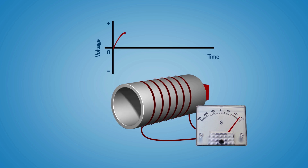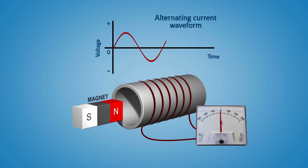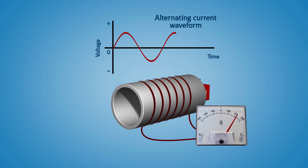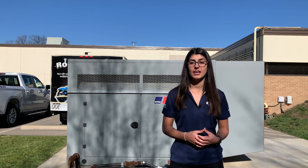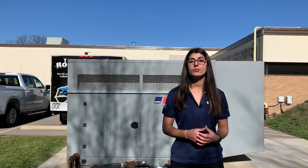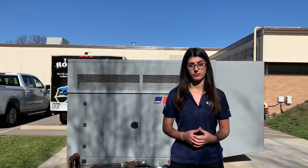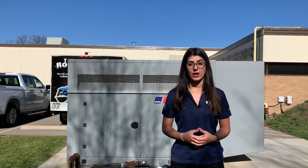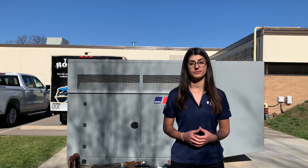As the magnet travels back and forth through inside the loop of wire, it induces a current in that wire. Since the field is continuously changing, or alternating, it creates what we would call a sine wave, or alternating current waveform. This is where the term AC power comes from, which stands for alternating current.